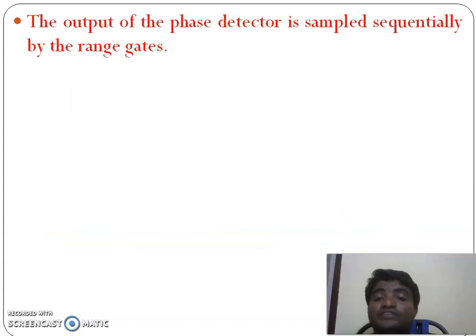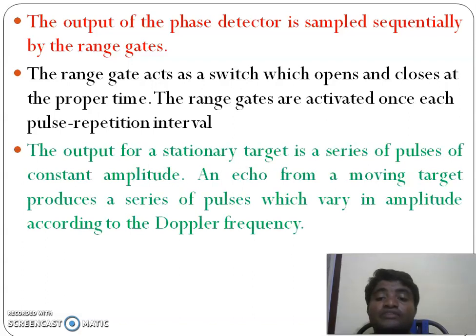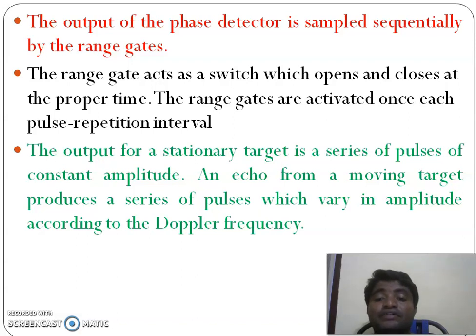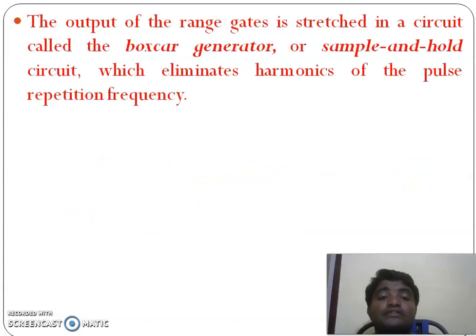The output of the phase detector is sampled sequentially by the range gate. The range gate switch opens and closes at a coordinated track. The output of a stationary target is a series of pulses having constant amplitude, while an echo from a moving target produces a series of pulses having a varying amplitude according to the doppler frequency.